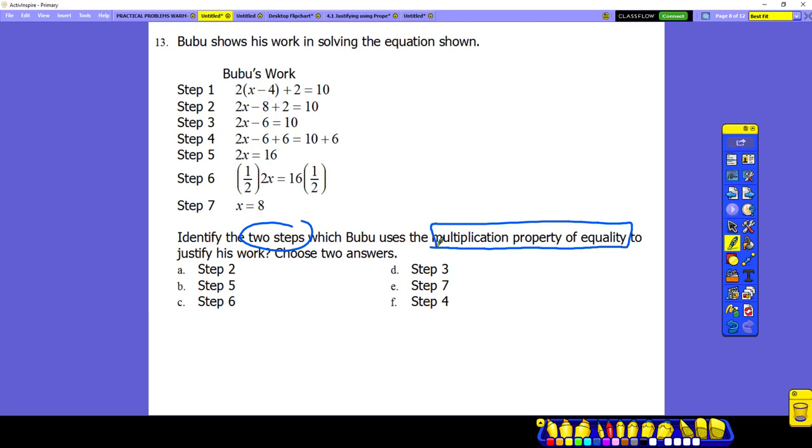Six. Very good. So step six, we multiplied one half of both sides. Okay? So step six will be one of the correct answer. Okay? And then you have to go one step back.